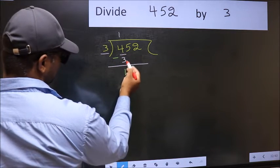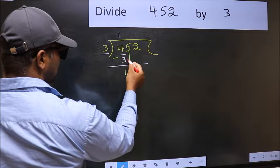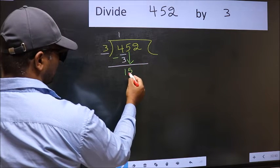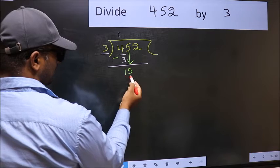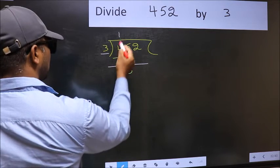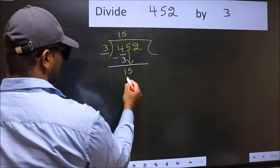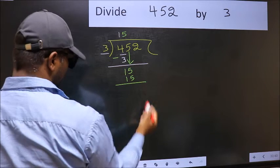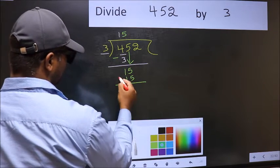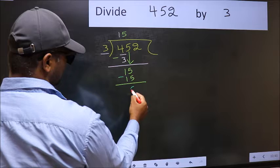After this, bring down the beside number. So 5 down. Now 15. When do we get 15 in 3 table? 3 5s 15. Now you should subtract 15 minus 15, 0.